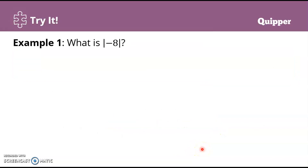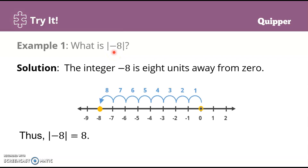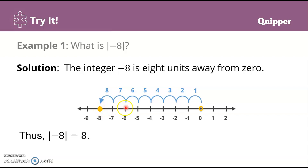Another example: what is the absolute value of negative 8? The integer negative 8 is 8 units away from zero. So this is zero and this is the number negative 8. We count the distance: 1, 2, 3, 4, 5, 6, 7, 8 — this is 8 units from zero. Therefore the absolute value of negative 8 is 8.